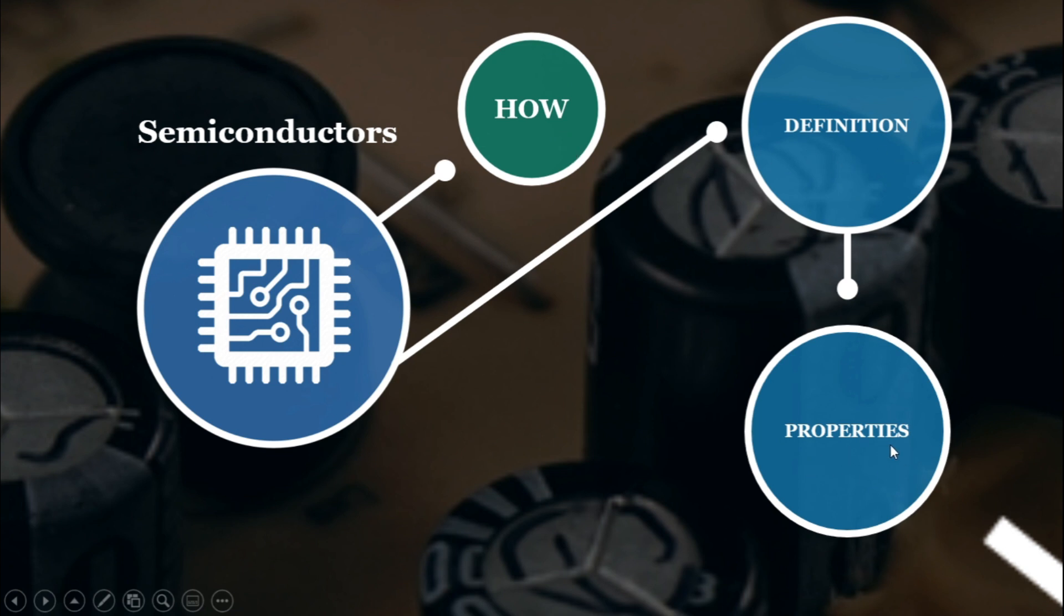Along the discussion of the properties of semiconductors, we will be comparing it to insulators and conductors in order to highlight its significant difference which led to its wide acceptance in electronics. And lastly, we will discuss the different types of semiconductors.